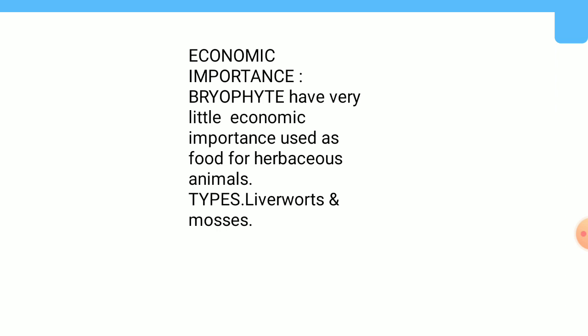Sexual reproduction: male and female sex organs are produced either on the same thallus or on different thalli. The sporophyte is differentiated into foot, seta, and capsule. After meiosis, spores are produced within the capsule. These spores germinate to form free-living gametophytes.